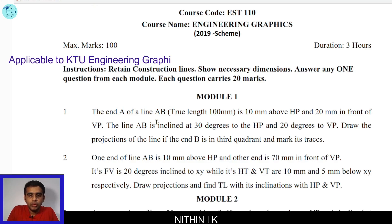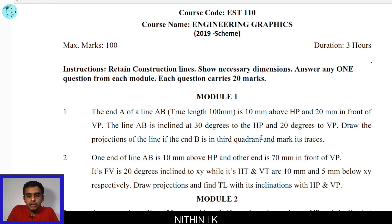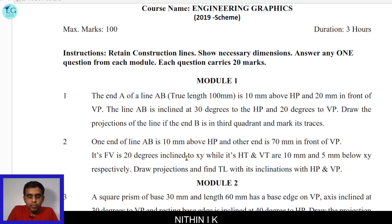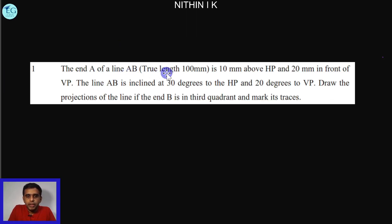This is a director type question involving a line inclined with HP and VP, true length. The end A of line AB, true length 100mm, is 10mm above HP and 20mm in front of VP. The line AB is inclined at 30 degrees to HP and 20 degrees to VP. Draw the projections of the line if end B is in the third quadrant and mark its traces.